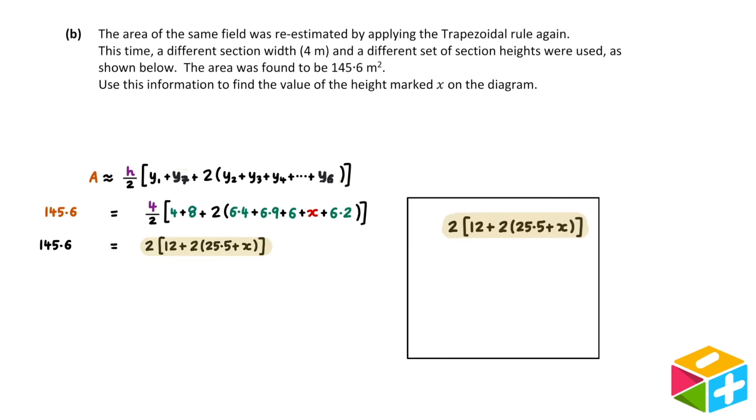From here, let's focus on the right-hand side of the equation and try to simplify things a bit more. Let's start by multiplying out the inner brackets. 2 times 25.5 is 51, and 2 times x is 2x. Now, I can add together the 12 and the 51. This gives me 63.